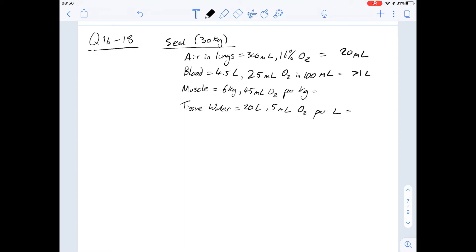If we look at muscle then, it says there's 45ml per kilogram, so that's going to be 90ml per 2kg, so that's 270ml.